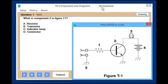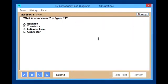In this case, it will be 48 questions. This particular question has a drawing involved with it. There you see the drawing. What is component 2 in figure T1? Component 2 happens to be a transistor. So you want to close it and tell it B and then submit it.